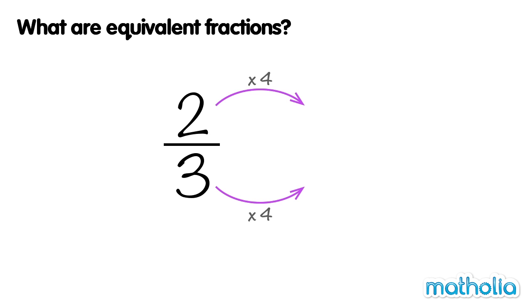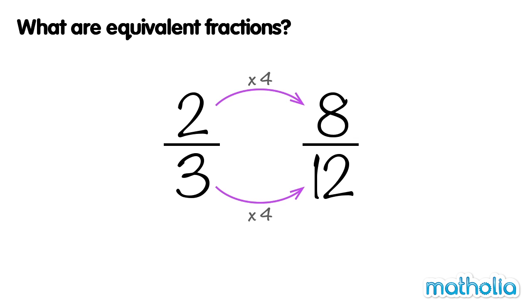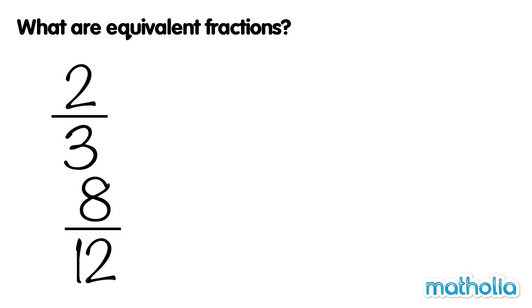Two times four equals eight. Three times four equals twelve. Two thirds and eight twelfths are equivalent fractions. We can see that they are the same by comparing the fractions as coloured parts of a rectangle.